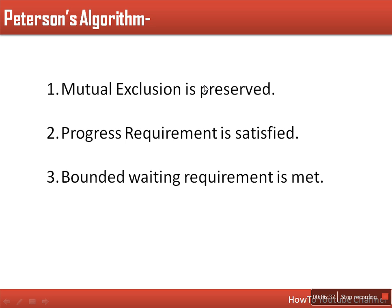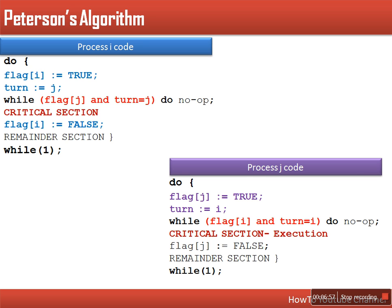For this solution to be correct, it has to follow three properties. The first property is mutual exclusion: at a time, only one process can be allowed to enter its critical section. If we assume both processes are executing in their critical section simultaneously, then for process i's loop condition, one of flag[j] or turn equal to j must be false. If turn equals i, process j will be stuck in its loop and cannot enter its critical section — so mutual exclusion is preserved.